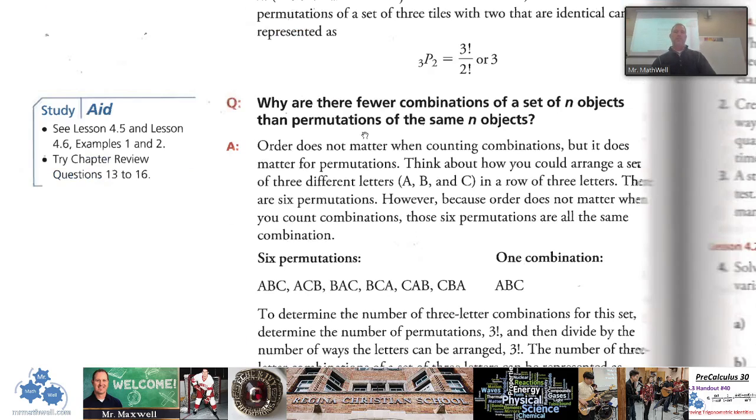Alright, question number two: why are there fewer combinations of a set of n objects than permutations? Well, you should remember, bottom line down here, if we have three different distinguishable objects and order matters, ABC is different than ACB and so on.